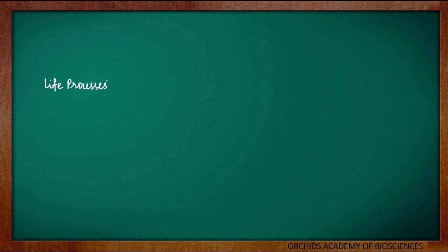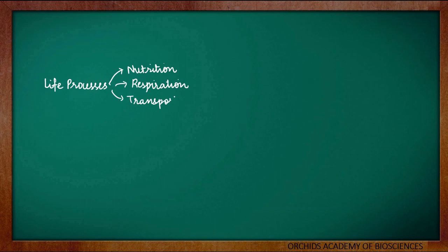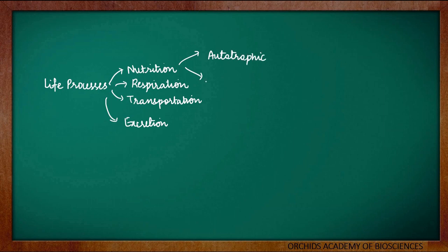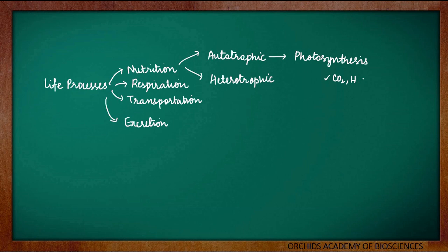Now, let us recall what we have discussed so far. We started from life processes — the activities which are essential for the survival of living beings. Under life processes, we started with nutrition, the process of obtaining or utilizing the nutrients. Then we discussed respiration, in which nutrients are broken down to give energy for various cellular needs. Then we discussed transportation, in which blood carries oxygen, nutrients and various other substances to all required parts of the body. And finally, excretion — the removal of byproducts or waste from biochemical reactions. Under nutrition, we discussed autotrophic nutrition, in which the organism can prepare their own food, and heterotrophic nutrition, in which the organism depends on other organisms for food. Finally, under autotrophic nutrition, we discussed photosynthesis, in which autotrophs prepare their food using carbon dioxide and water along with sunlight and chlorophyll.